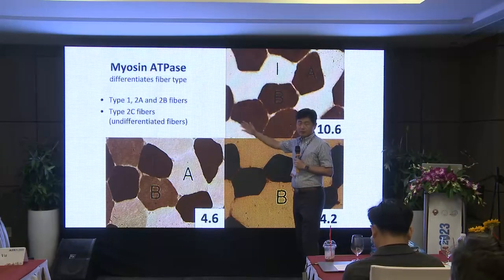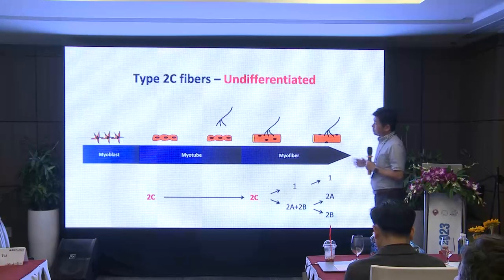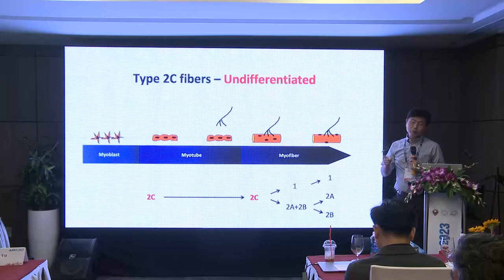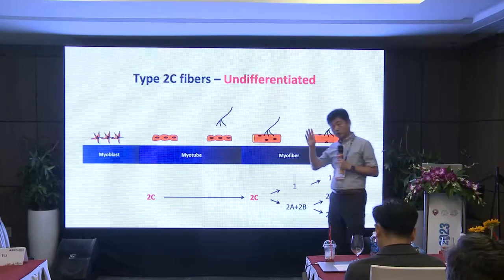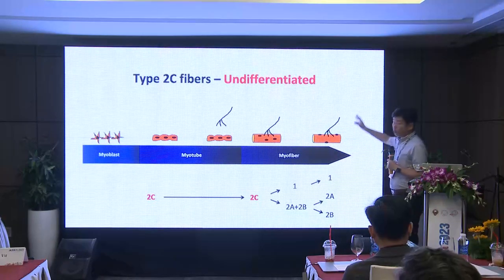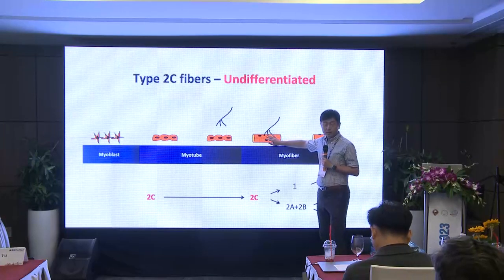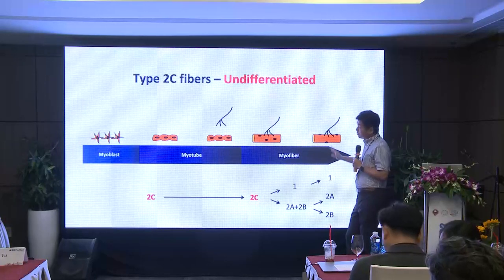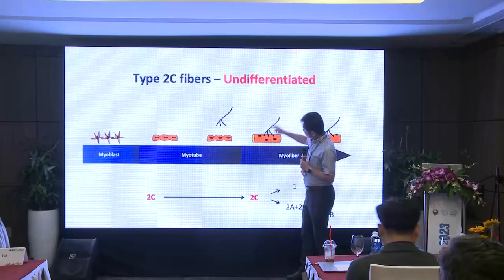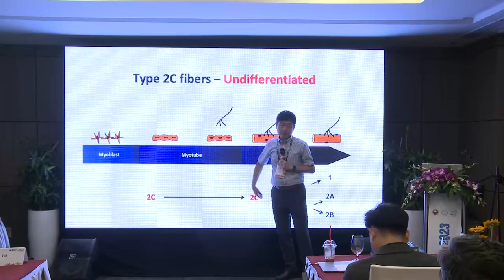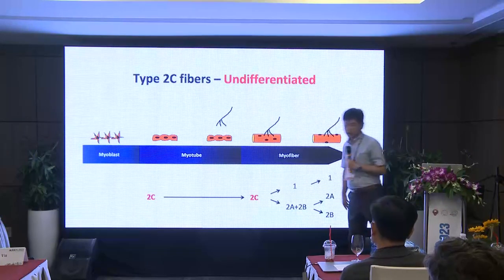There are also type 2C fibers — these are immature or undifferentiated fibers. An important concept: who determines the fiber type? It is the motor neuron. There are type 1 motor neurons, type 2A, and type 2B — if a fiber is innervated by a type 1 motor neuron, it becomes type 1. Until fibers are innervated during development, they don't know what type to become — this undifferentiated stage is type 2C. Type 2C fibers remain stained at any pH condition. In Duchenne muscular dystrophy, many regenerating fibers are type 2C because they are newly forming.